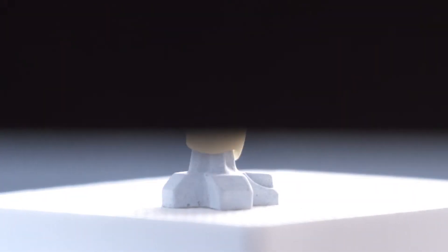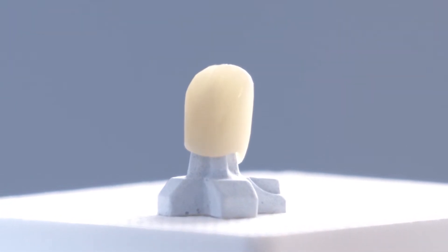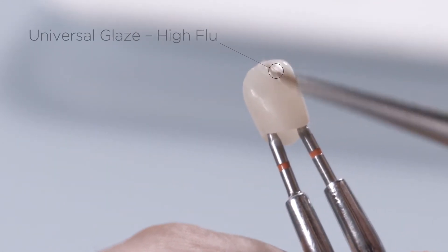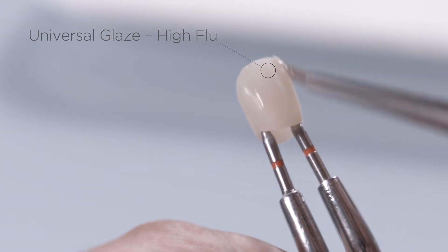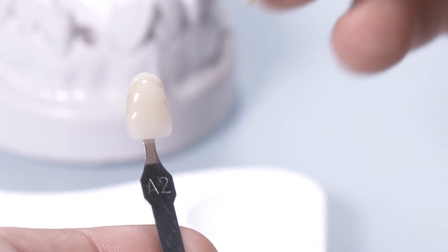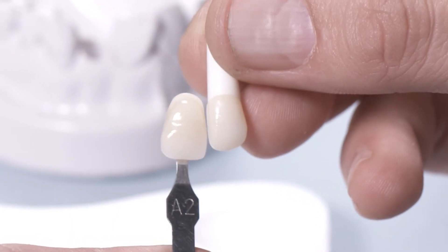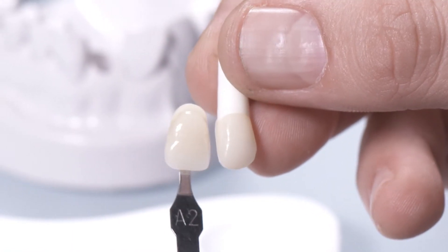After stain firing, add High Flu Universal Overglaze to the monolithic restoration. The final shade check against the shade tab confirms the quick and easy shade reproduction with appealing aesthetics.